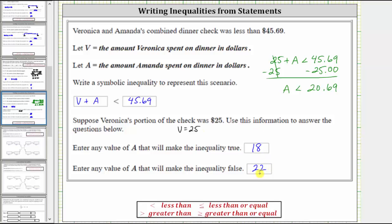the inequality is false, because if we substitute 22 for A, we have 22 is less than 20.69, which is false. I hope you found this helpful.